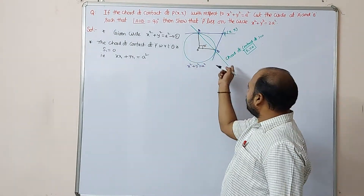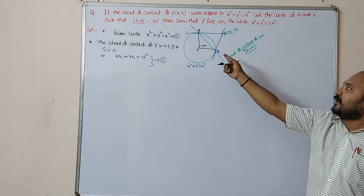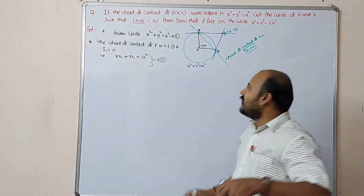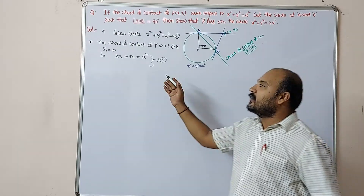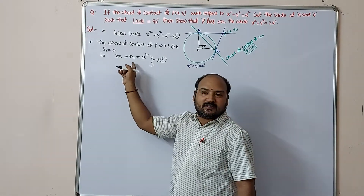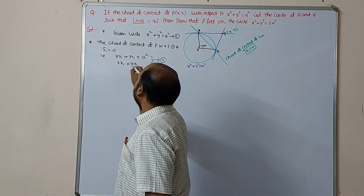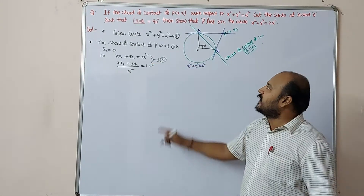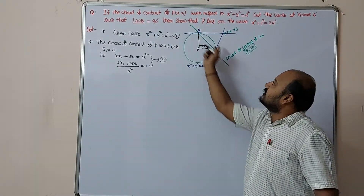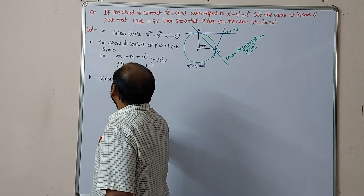This chord of contact (equation 2) cuts the circle at two different points A and B, making angle AOB = 90 degrees, where O is the center of the circle. Whenever a line cuts a curve, we apply homogenization. Equation 2 is in the form lx + my + n = 0; to homogenize, we make it equal to 1: (xx₁ + yy₁) / a² = 1.